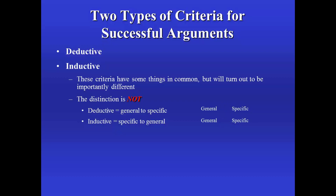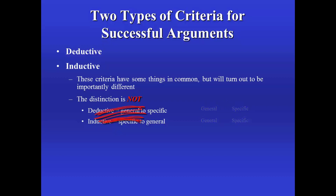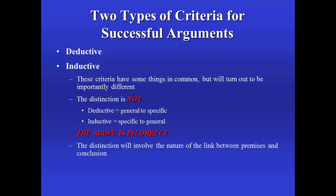You can have deductively successful arguments that proceed from specific premises to general conclusions, from general premises to general conclusions, or specific premises to specific conclusions, and the other combinations as well. So we are not going to distinguish deductive from inductive in terms of the kinds of premises or conclusions. Rather, we're going to make the distinction in terms of the kind and strength of the link between the premises and the conclusion.